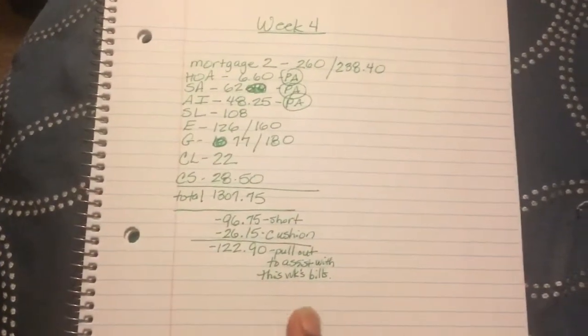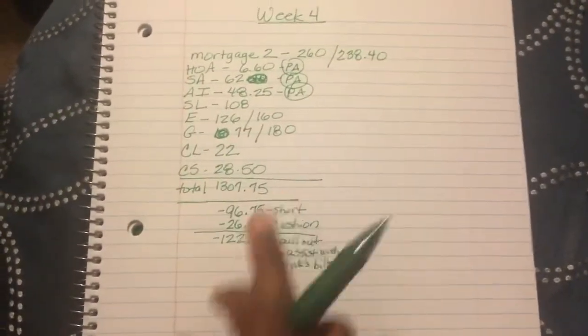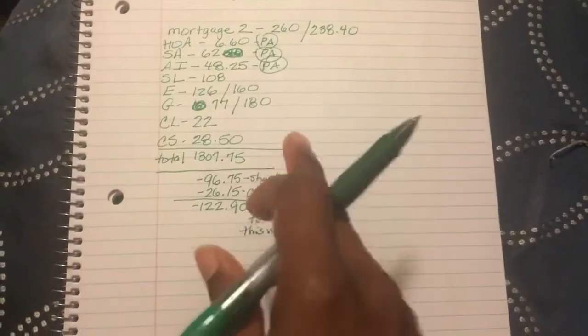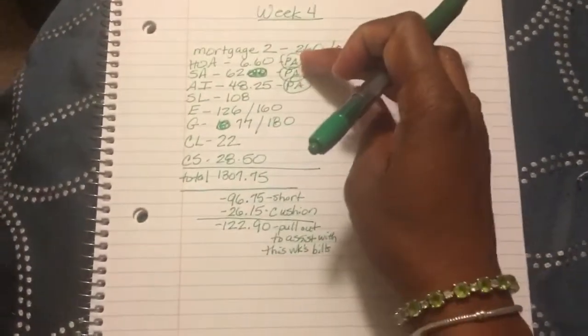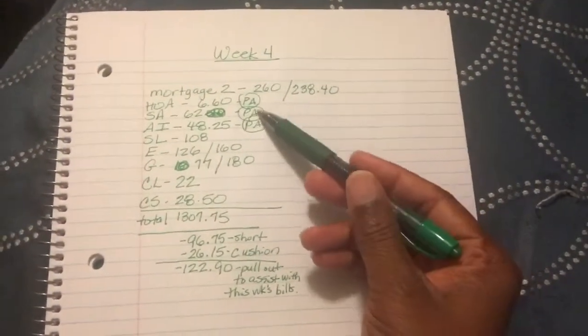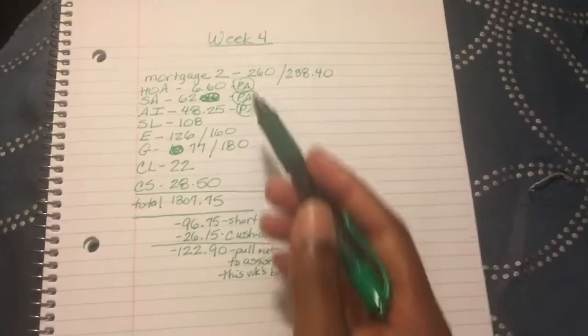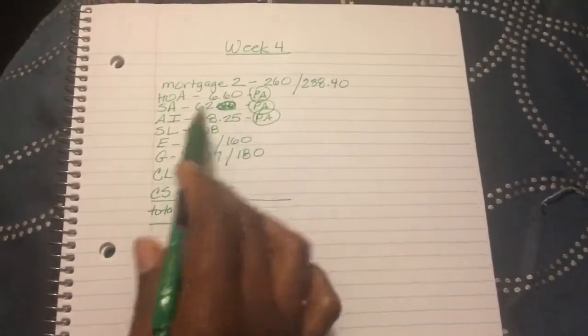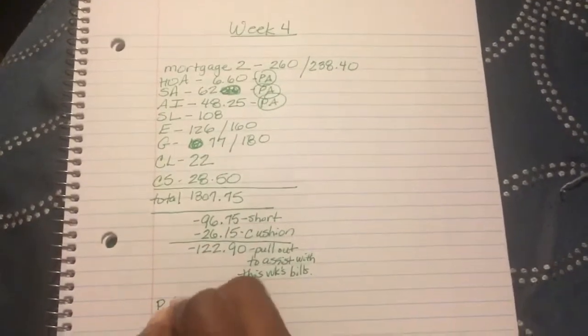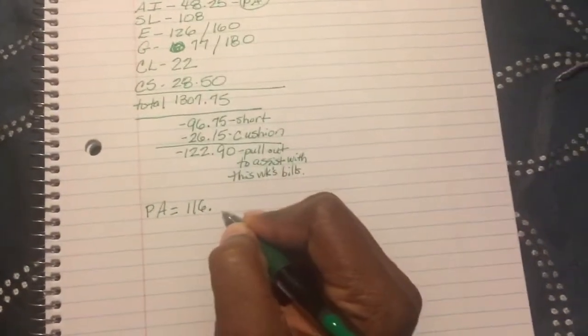And now, remember after that third step, first step, I write out all my bills and how much I have allocated for each one, total it up, get all of my shortage based on what I need to help assist me with this week's bills plus my shortage. After that step, second step, remember is I go through and put the put away notation or PA right beside every expense that I'm not paying this week. Third step is I add up all the different PA or put away expenses. So $6.60 plus $62 plus $48.25 is going to come to a total of $116.85.